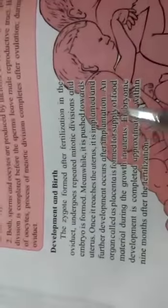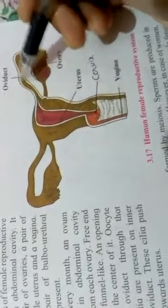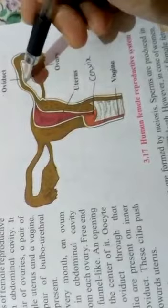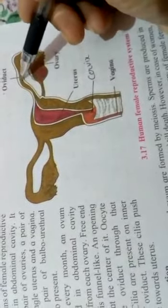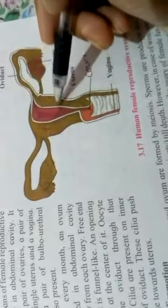The embryo will be pushed towards the uterus. Fertilization takes place in the oviduct, then the zygote undergoes mitosis resulting in embryo formation. The embryo is pushed towards the uterus where proper development begins.